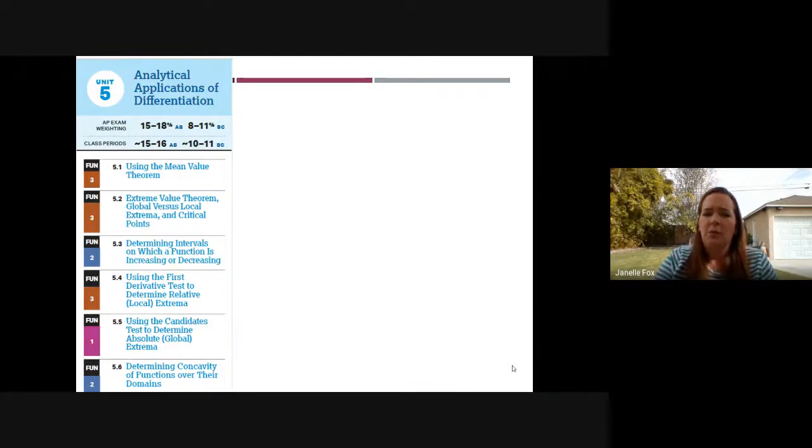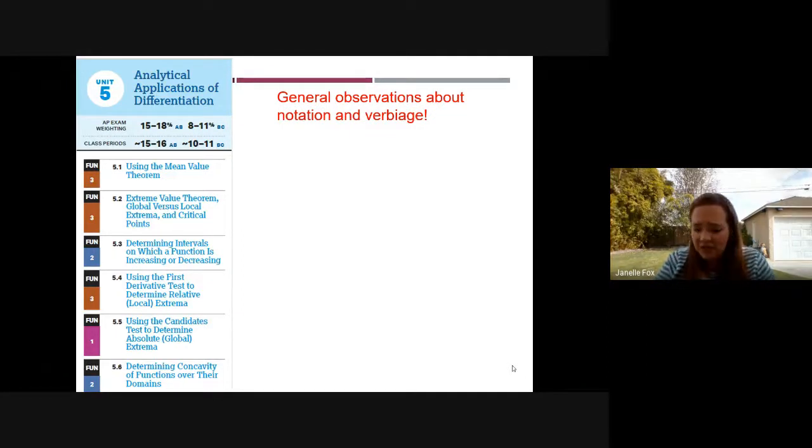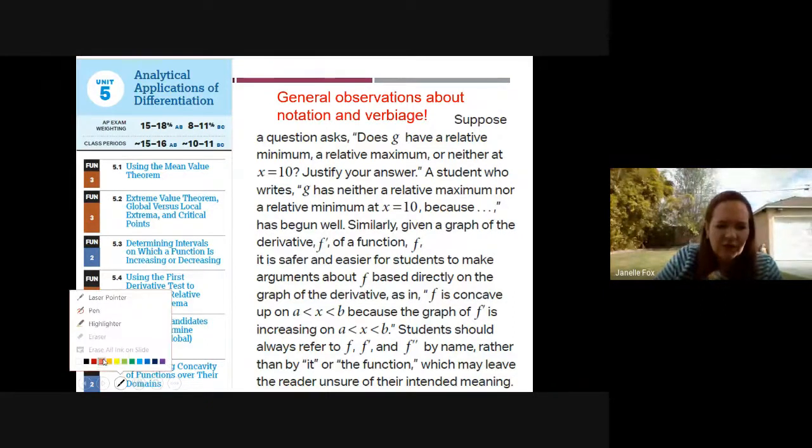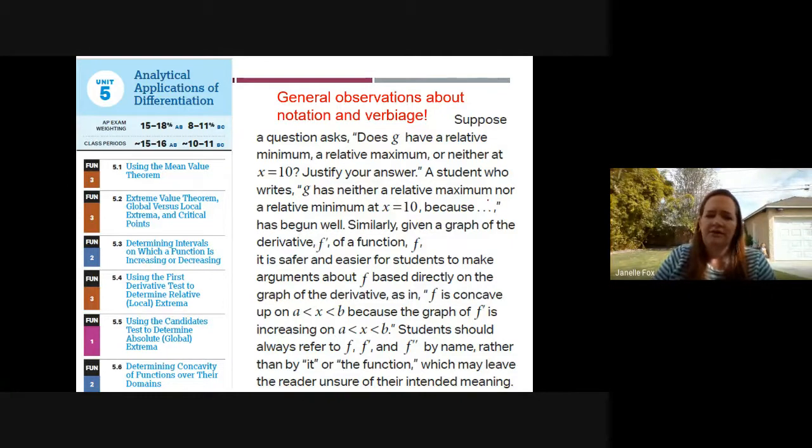And so this is what's going to come up as a little bit wordy, but I want to just talk about what college board has put forth about notation and how we say things, the verbiage of stuff. So you have to be very, very specific. So when it says does this function G have a relative min or max at 10, if you write something like these are words that they were suggesting for us to use, like G has neither a relative maximum or minimum at X equals 10, because you see how you're restating the question.